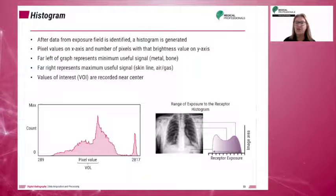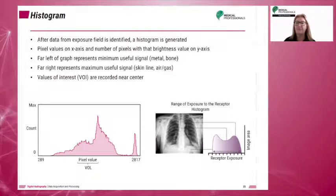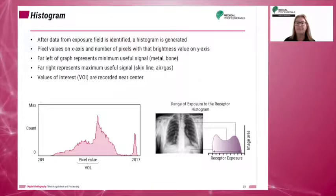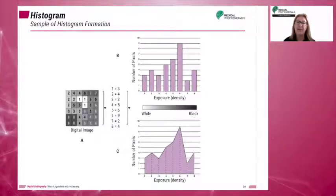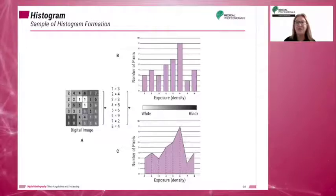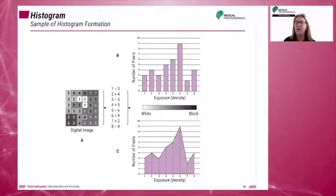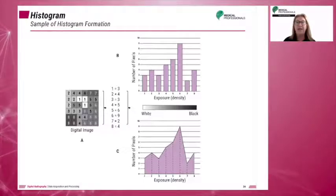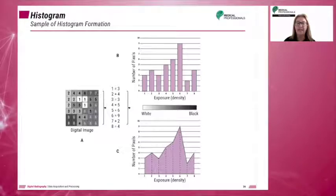This slide demonstrates the formation of image data into a histogram. The pixel values in the matrix are represented in a bar graph. Exposure values for each pixel are on the horizontal axis, and prevalence of those pixel values is depicted on the vertical axis.